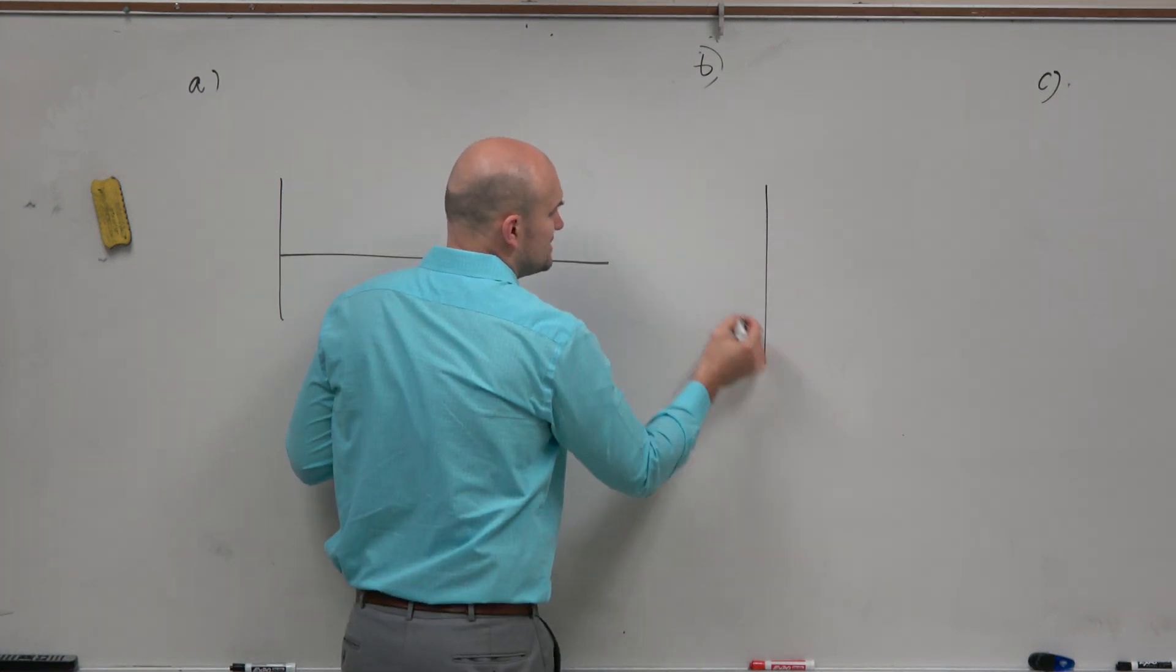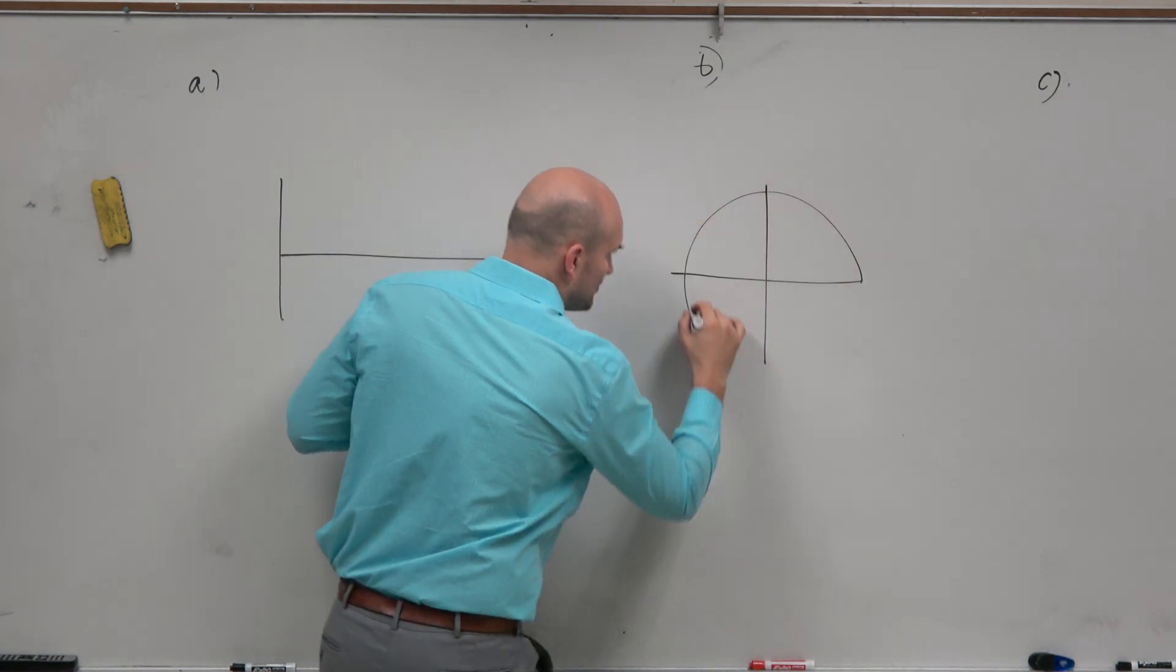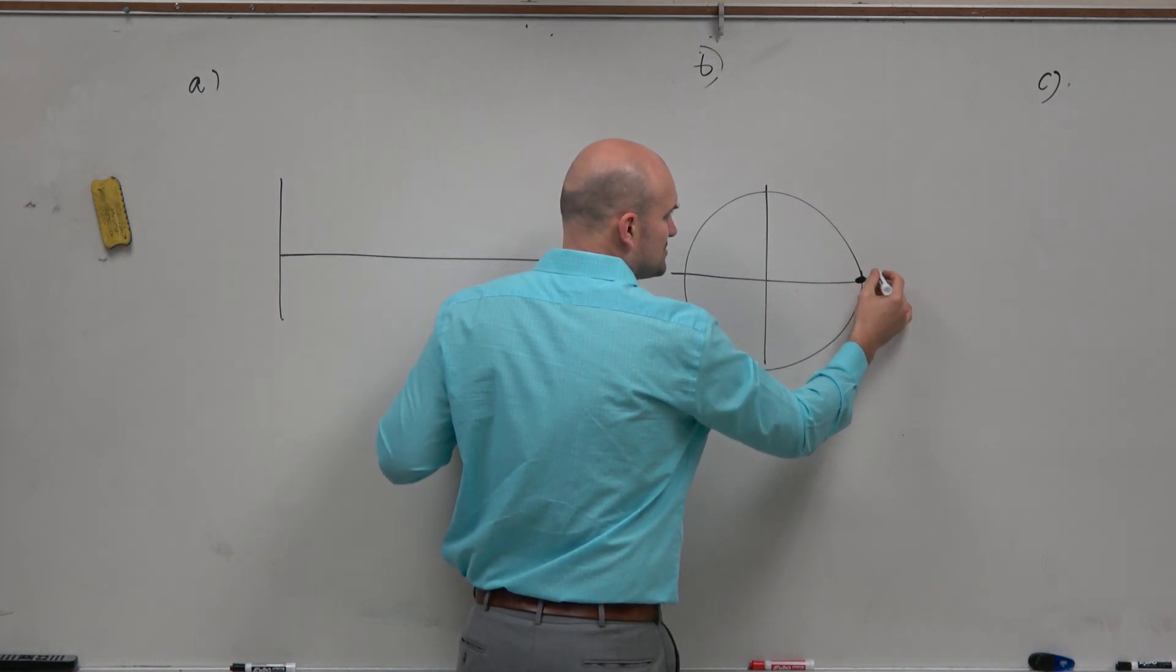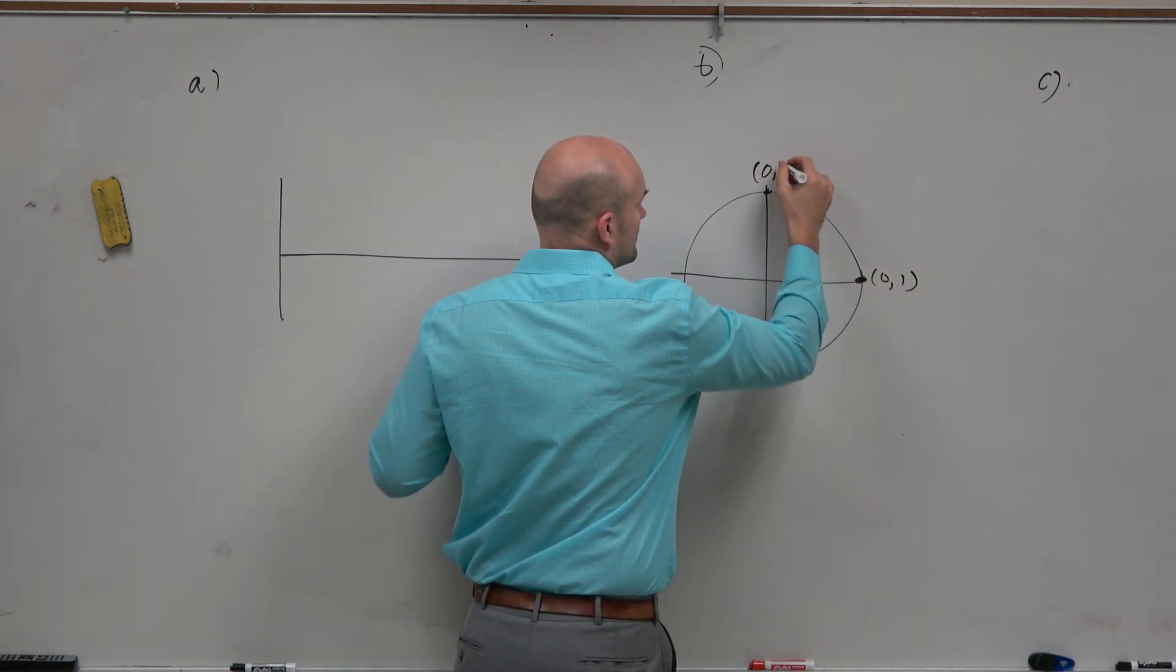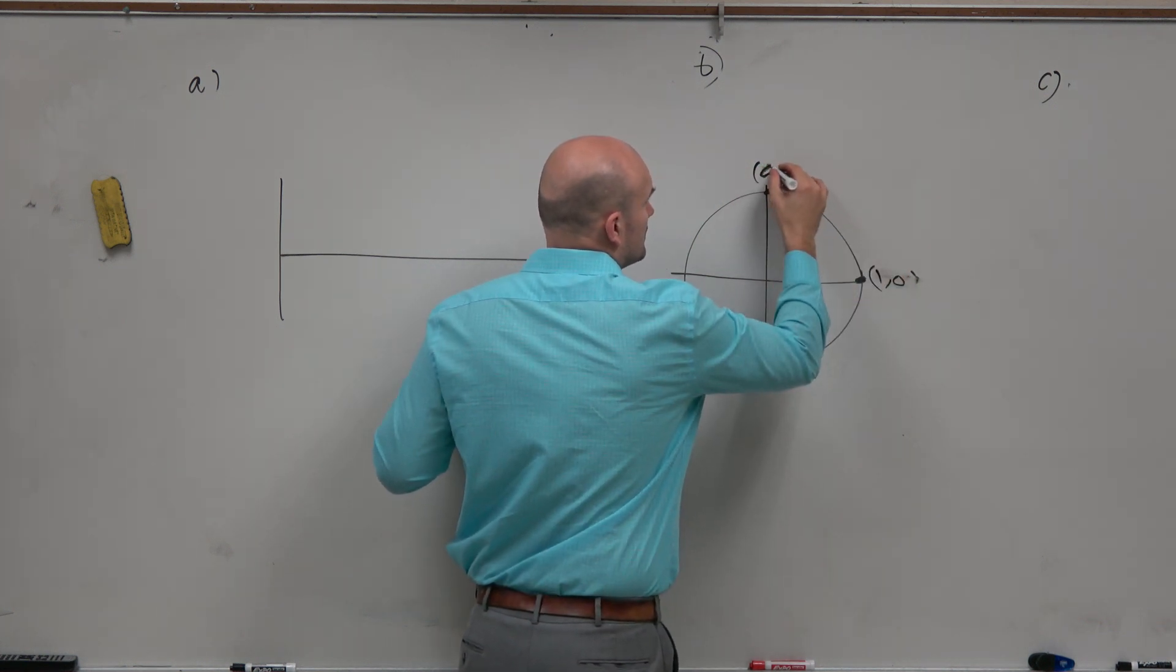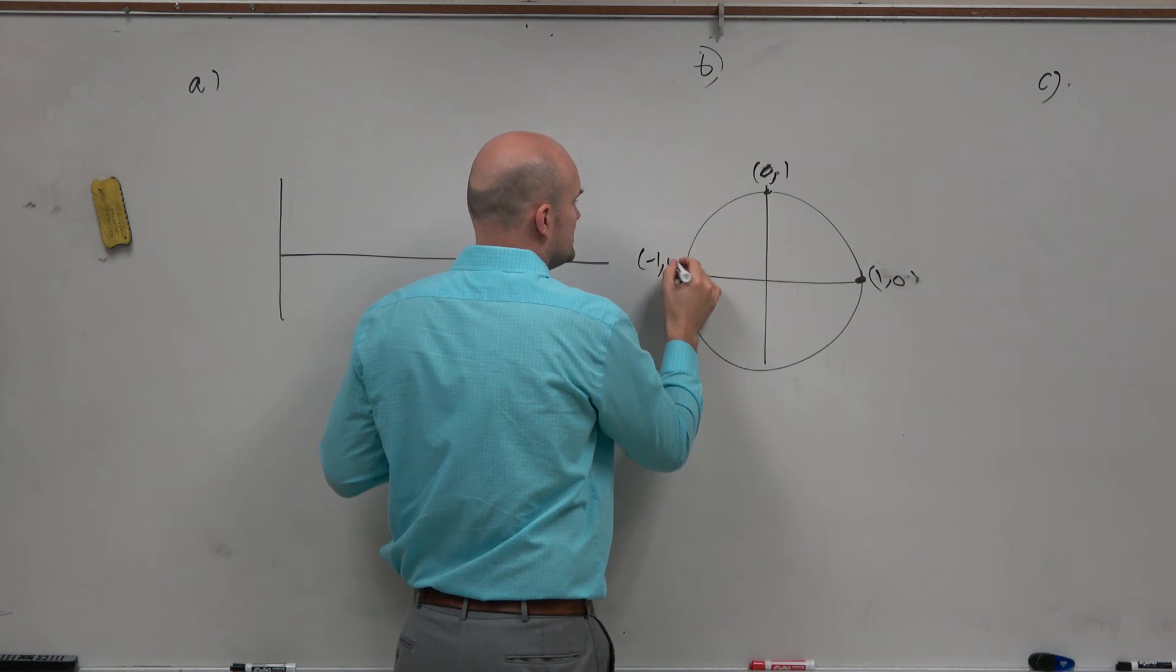But in reality, we don't need to memorize that initial period or all the points in the graph because we can identify the sine graph just by using these coordinate points. That's 1, 0. That's 0, 1. Negative 1, 0.